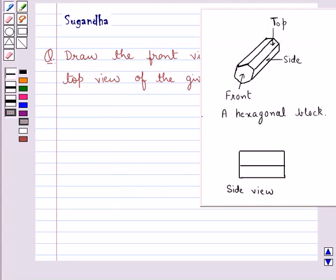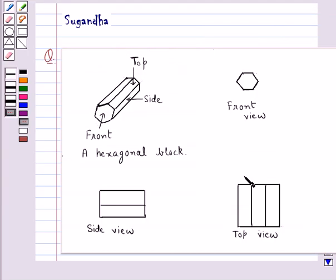Now we are left with just the top view of this block. So let's draw the top view now. This figure shows the top view of this block.